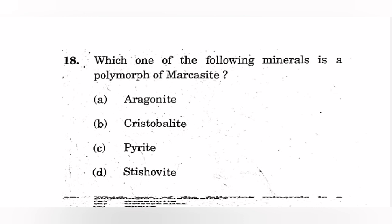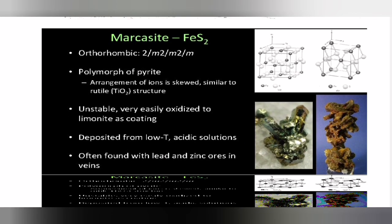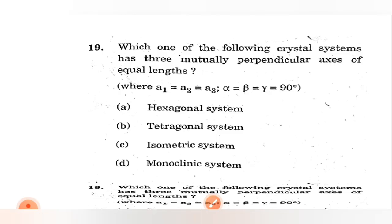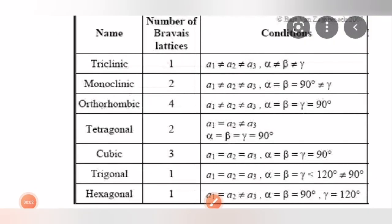The answer is pyrite. This picture is posted for reference. Three mutually perpendicular axes of equivalent length - it is isometric system. You should remember this table while solving these questions: triclinic, monoclinic, orthorhombic, tetragonal, trigonal, hexagonal, cubic. You can make mnemonics like TMOTTHC. Number of Bravais lattices are 1, 2, 4, 2, 3, 1, 1, and these are the conditions. They have directly asked about cubic, which is also called isometric.